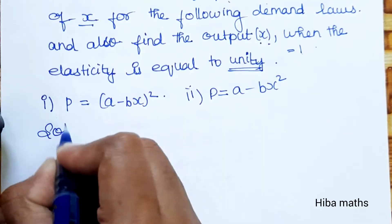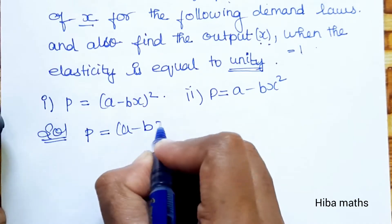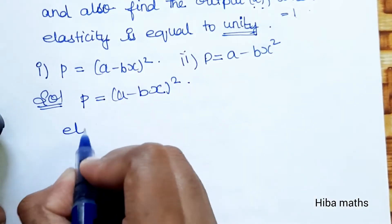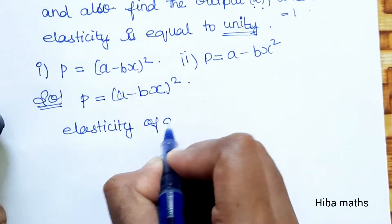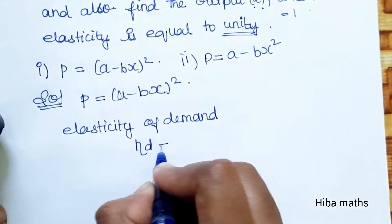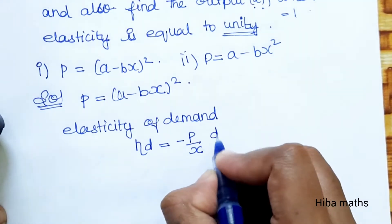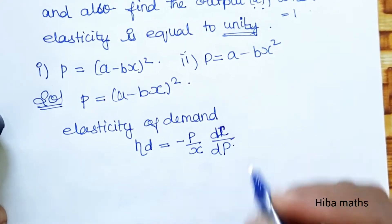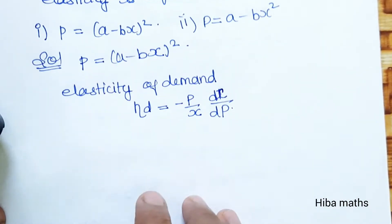Solution: First, given is p = (a - bx) whole square. We solve the elasticity of demand. Elasticity of demand eta_d is equal to minus p by x into dx by dp.